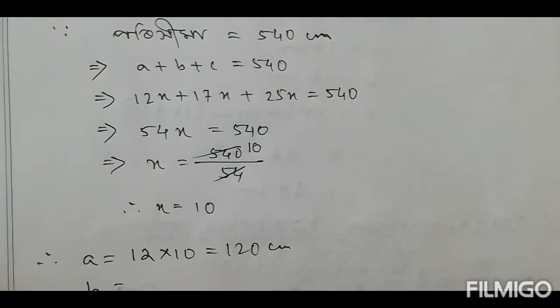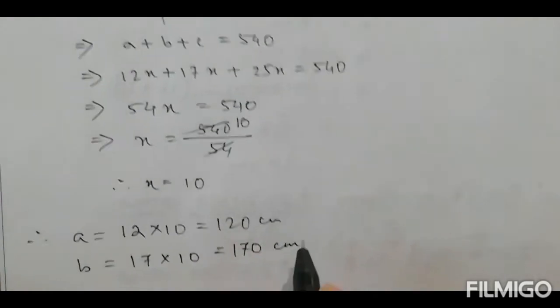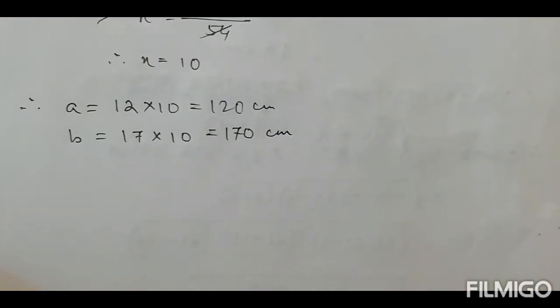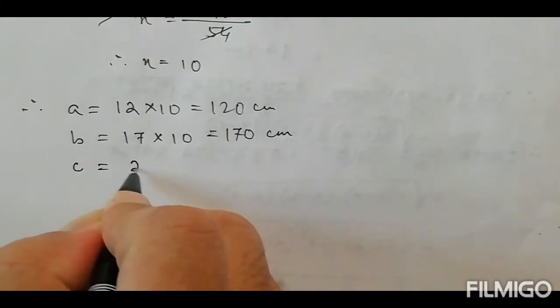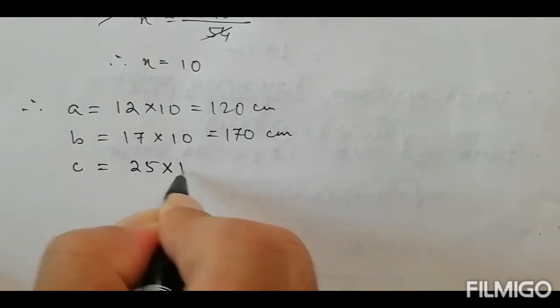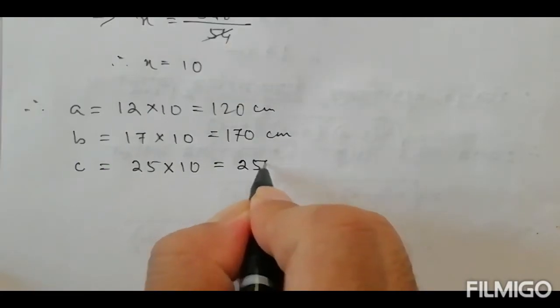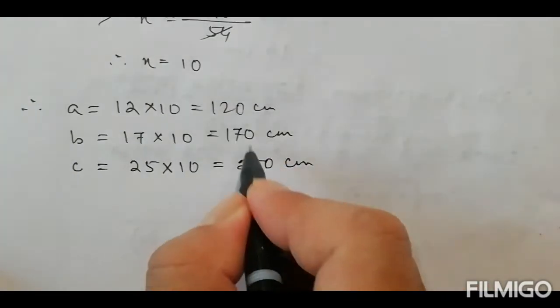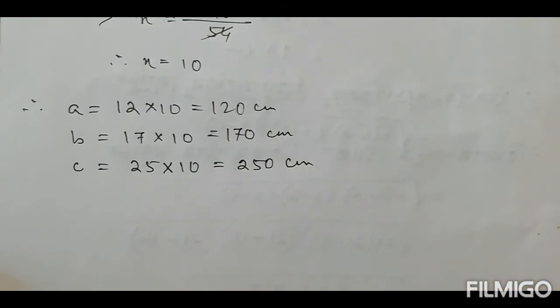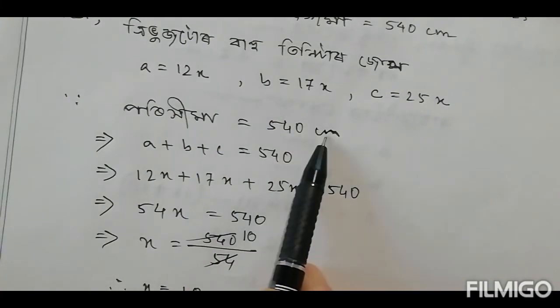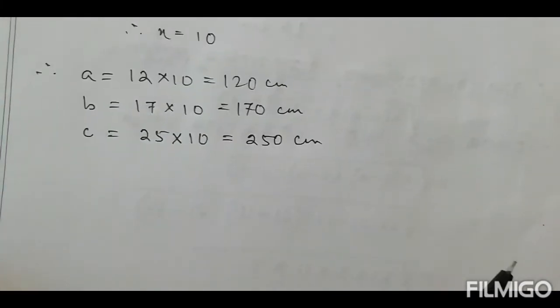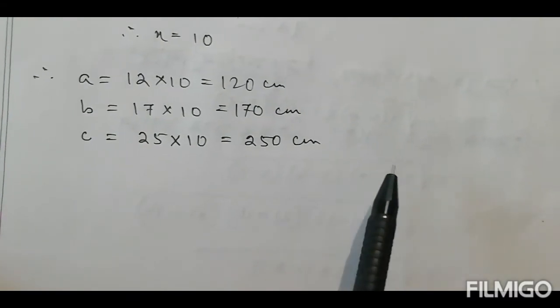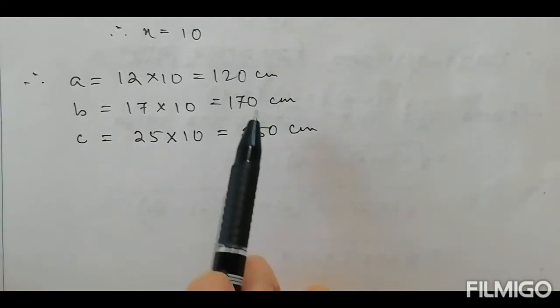A means 12 into 10 equals 120. B means 17 and X is 10, so B is 170 cm. C means 25 times X is 10, so C is 250 cm. And A means 540 is verified as 540.